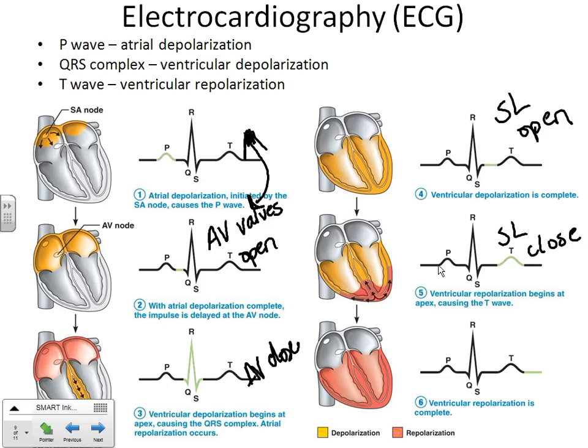When your SA node or AV node isn't firing correctly, that's when people need pacemakers. A pacemaker is basically a little set of batteries that shock your heart — instead of your heart naturally initiating the electrical signal at the SA node, something artificial shocks your heart when it's supposed to. Doctors don't wait until the heart completely gives out. If an EKG shows consistently low voltage or occasional erratic spikes, they'll say you may need a pacemaker to keep your heart on a normal rhythm.